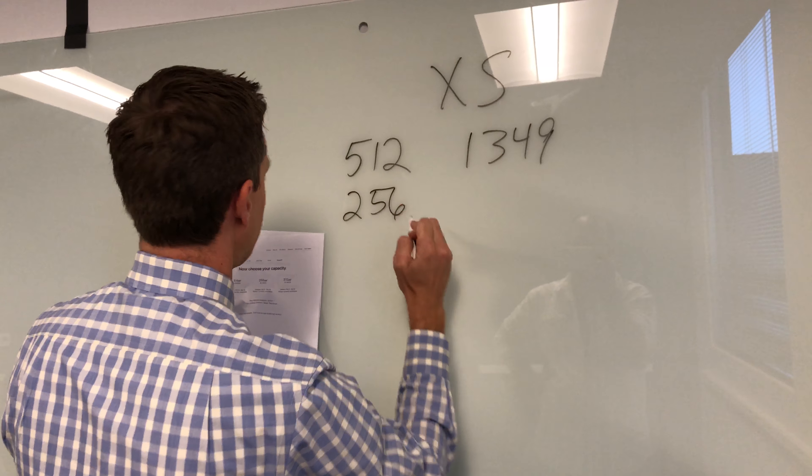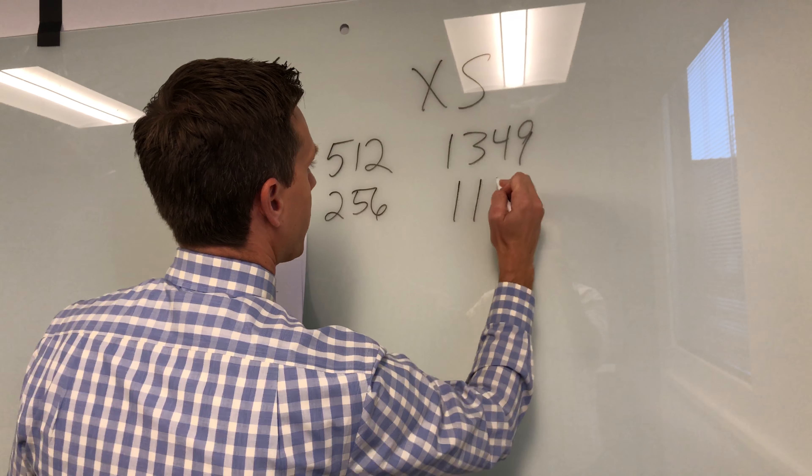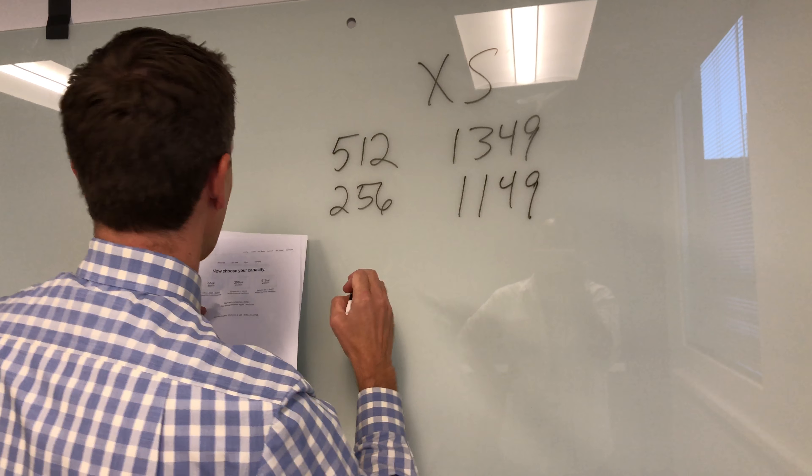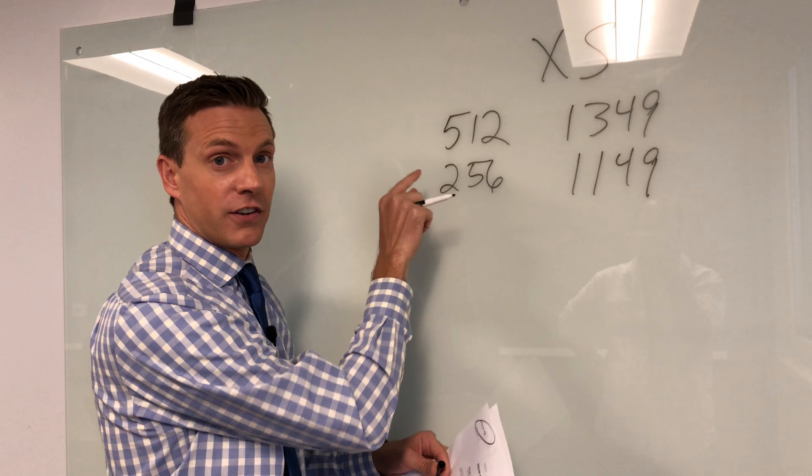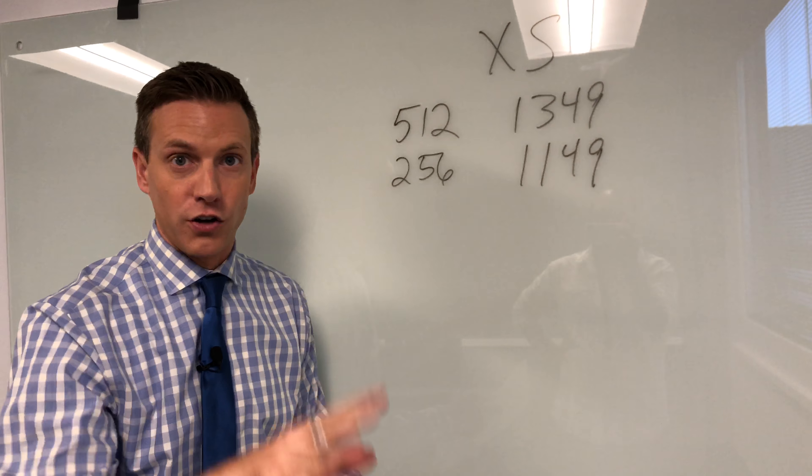For 256 gigs, you pay $1,149. And we're just following a pattern here. You see the pattern? They're taking the memory, they're cutting it in half, they're taking $200 off the price. Let's just follow it down.